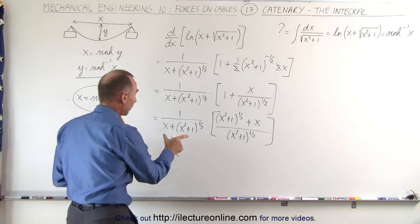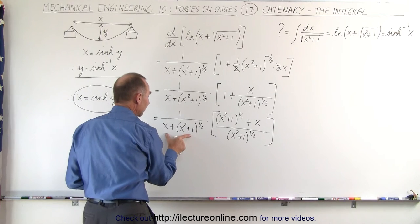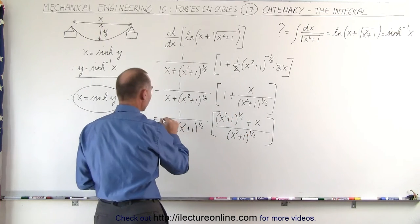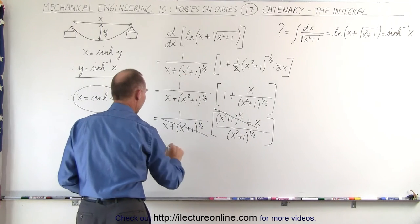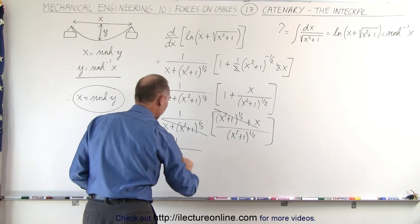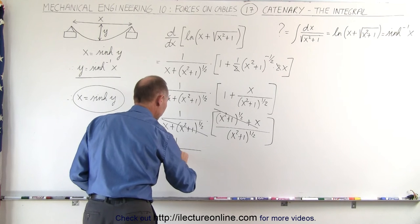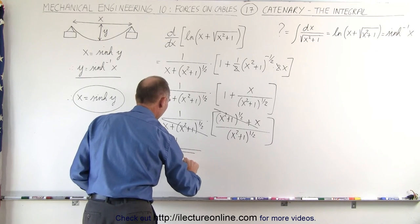Now I realize that what I have in the denominator here is exactly the same as what I have in the numerator there, which means that this will cancel out this, and we can say that this therefore is equal to 1 over the square root of x squared plus 1.